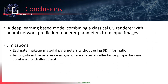To conclude, this presentation introduces a deep learning-based model combining classical computer graphic renderers with neural network prediction of renderer parameters from input images. Limitations include estimating makeup material without using any 3D information, even though the face is a 3D object, and not accounting for the ambiguity in the reference image where material reflectance properties are combined with the illuminant. In the future, we plan to work on these limitations. Thank you for listening.